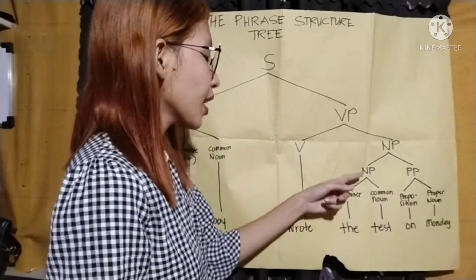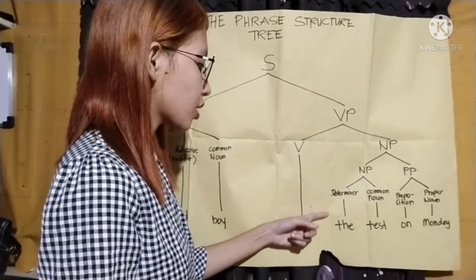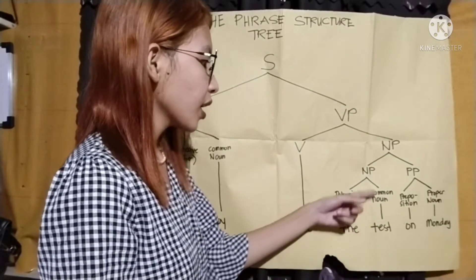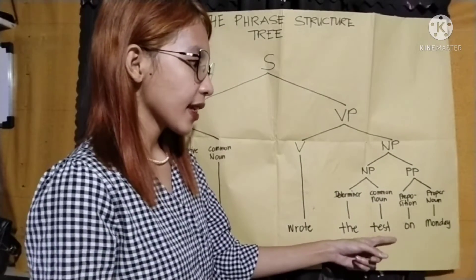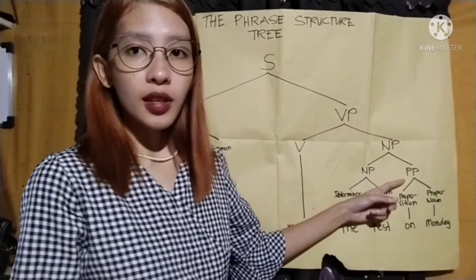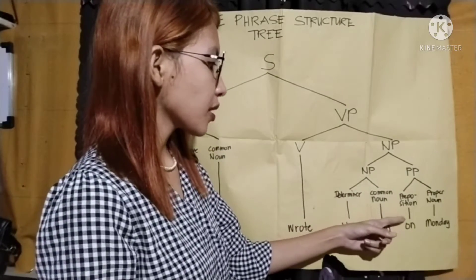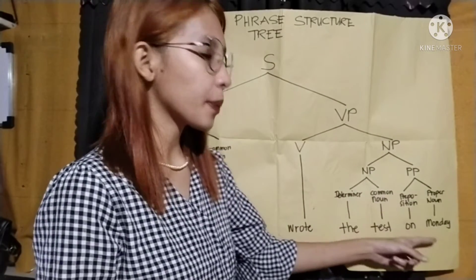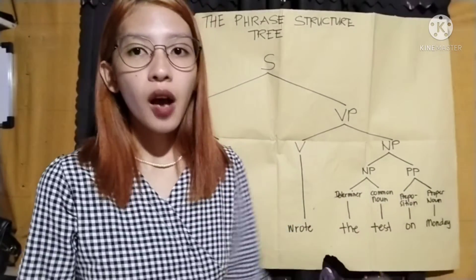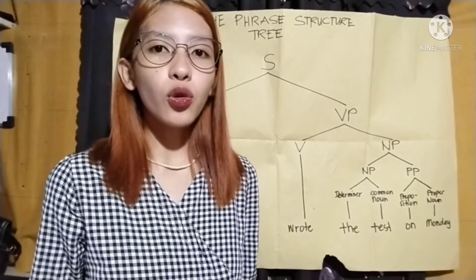The noun phrase consists of the determiner 'the' and the common noun 'test.' The prepositional phrase consists of the preposition 'on' and the proper noun 'Monday.' That is how we analyze the grammatical structure of a simple sentence.